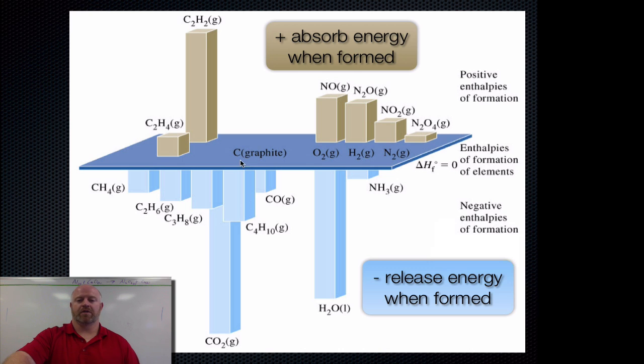However, substances down here that all have negative enthalpies of formation, these become more stable as you make them. So carbon dioxide and water are more stable type compounds. So when you create water, it releases energy when it's formed. When you create acetylene, it actually absorbs energy to be formed.